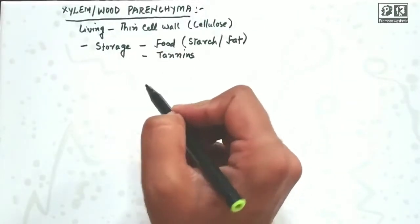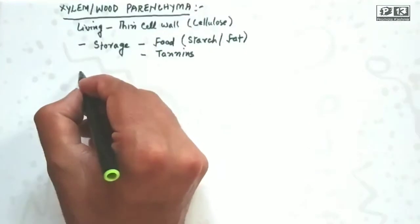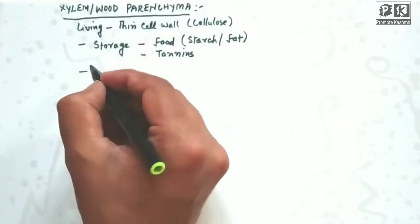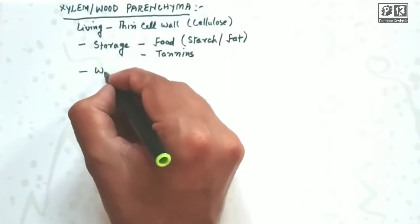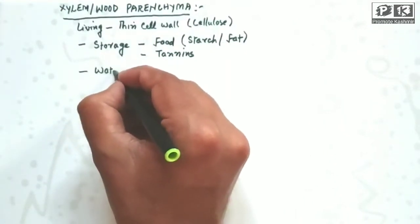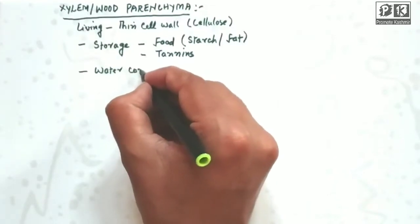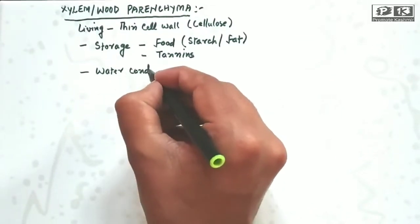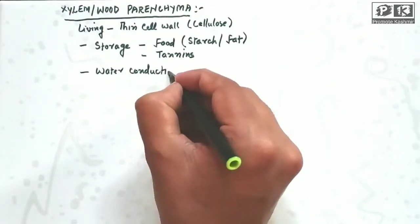Xylem parenchyma stores ergastic substances like tannins. Its second function is water conduction - that is an important function of xylem parenchyma.